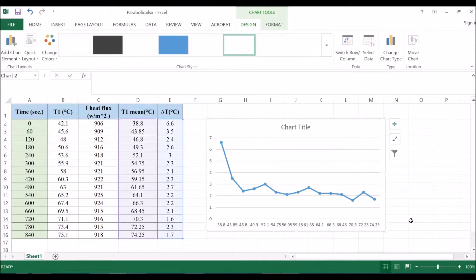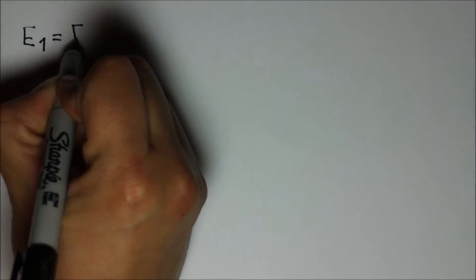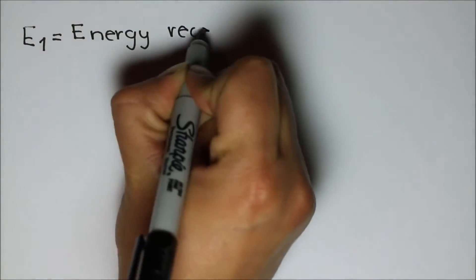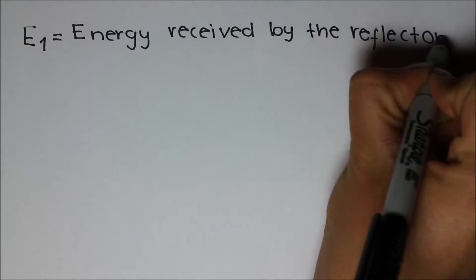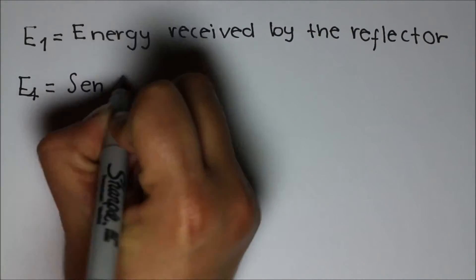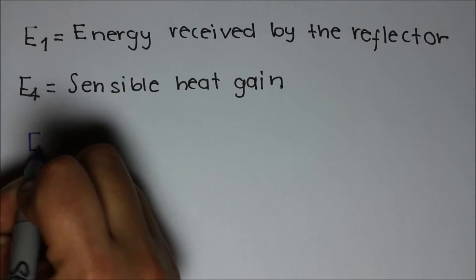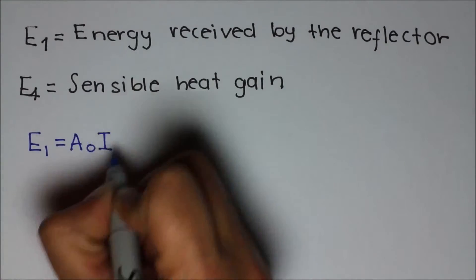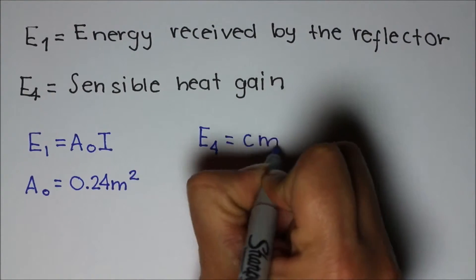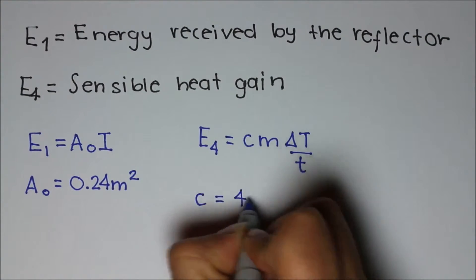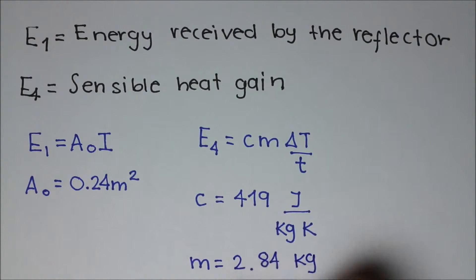This table should look like this. Now, we will calculate E1, which is the energy received by the reflector, and E4, which is the sensible heat gain. E1 is given by the projected area of the reflector times the radiation intensity. E4 is given by the specific heat of copper times the mass times the difference in temperature over the time.